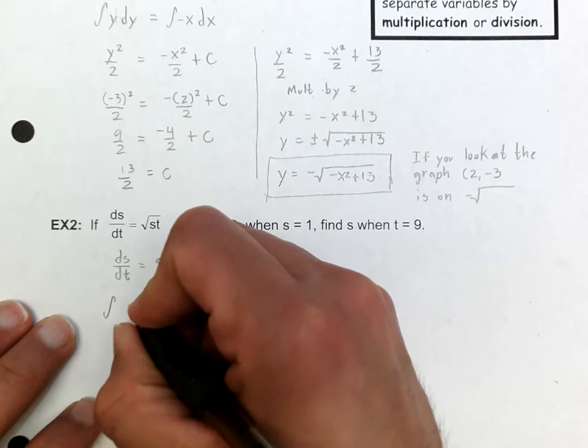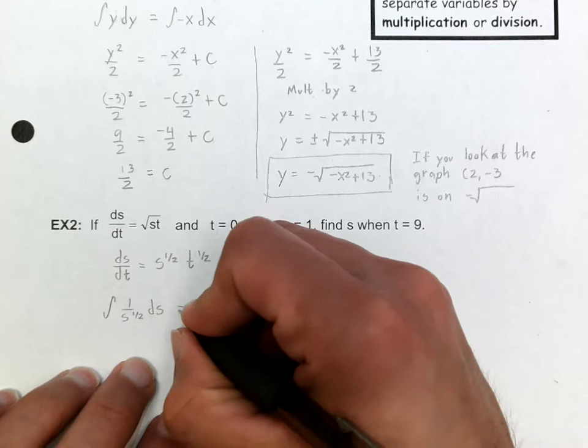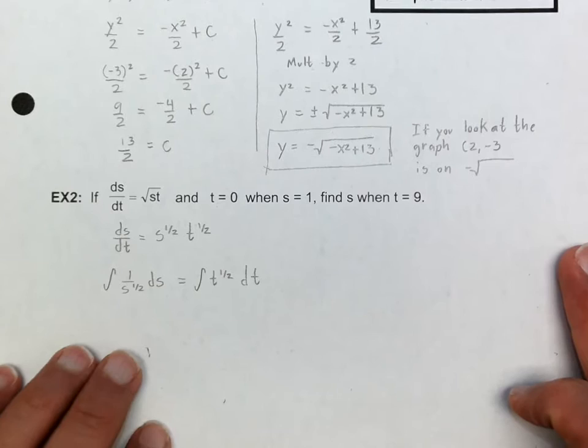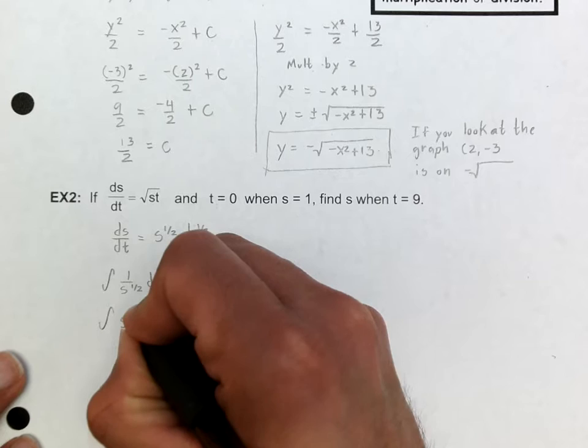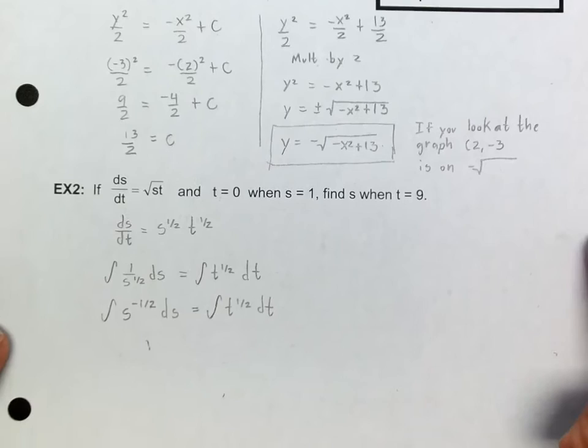I'll set up the integral of 1 over s to the one-half ds, which is the same as s to the negative one-half ds. And that's going to be equal to the integral of t to the one-half dt. Now I'm going to integrate — notice that I divided both sides by s to the one-half to separate the variables.